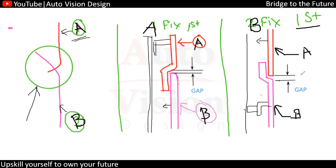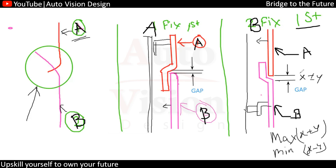The gap between A and B can be expressed as X ± Y, where X plus Y is the maximum gap and X minus Y is the minimum gap. For example, if the gap is 1 mm ± 0.5 mm, then the maximum gap is 1.5 mm and the minimum gap is 0.5 mm. This depends entirely on tolerance stack-up, from which we get the maximum and minimum gap values and then determine the nominal gap to maintain in the vehicle.